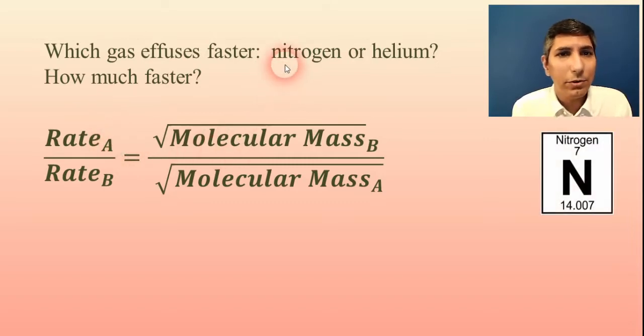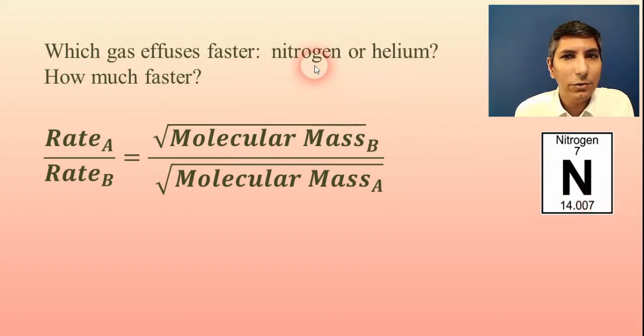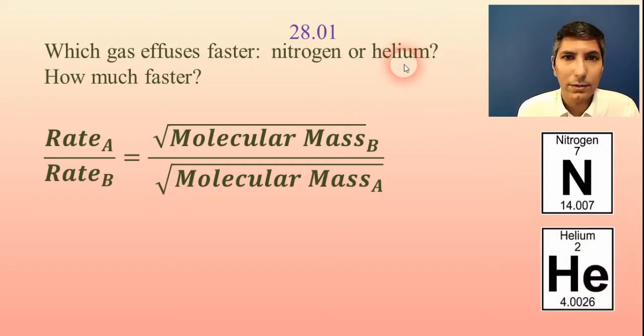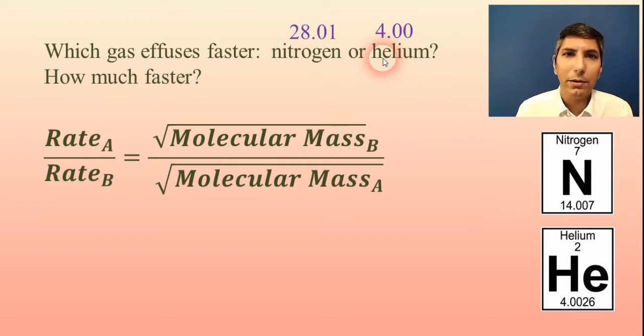So we have rate of A over rate of B equals the square root of the molecular mass of gas B over the square root of the molecular mass of gas A. I would strongly recommend that you choose the lighter gas to be gas A. That way the math is going to work out. So let's think about nitrogen first of all. Here's the periodic table square for nitrogen. And hopefully, as you know, nitrogen is diatomic. So it's actually N2. And so its molecular mass is actually twice that number. So it's about 28.01. And helium is just He. It's not diatomic. It's just He. And its molecular mass is 4.00. So can you look at those and tell me which one is the lighter gas? Well, it's helium, isn't it? And so that's the gas that's going to effuse faster. It's going to be helium. So we know that much. That's half credit right there. But let's do the second part of it. Let's figure out how much faster.